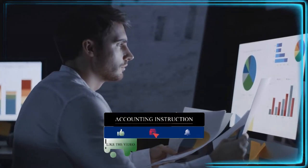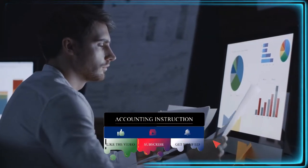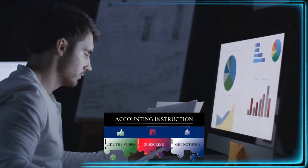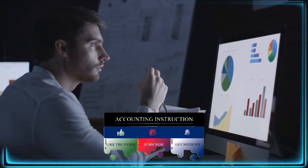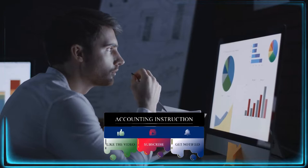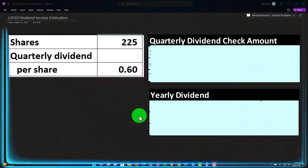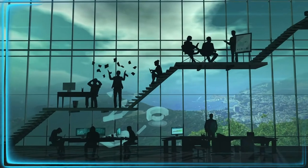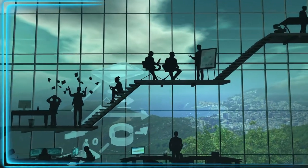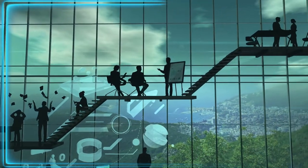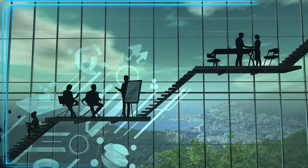Therefore the dividend policy has to be set in aggregate for all the stocks, and it's going to be determined by the board of directors and management deciding how dividends will be distributed. Also remember that dividends are only one component of the return we want from investments in stocks.